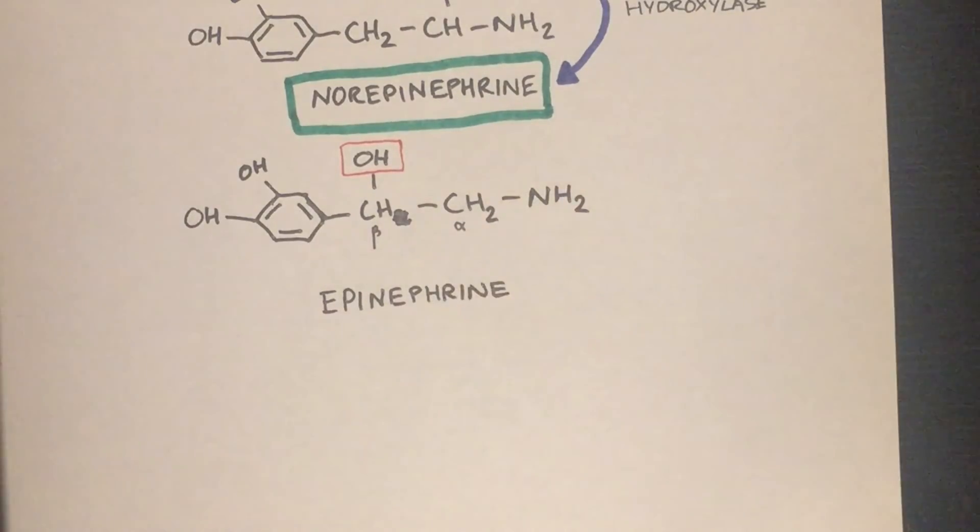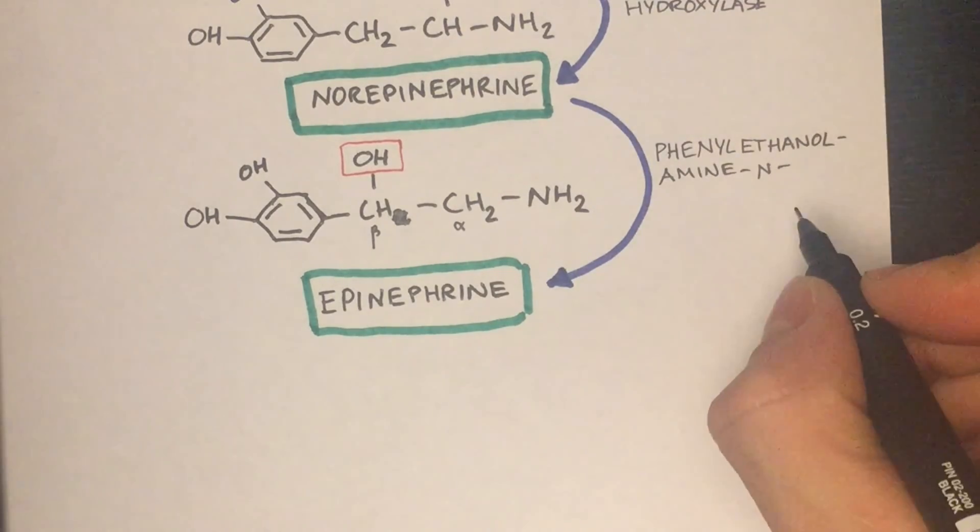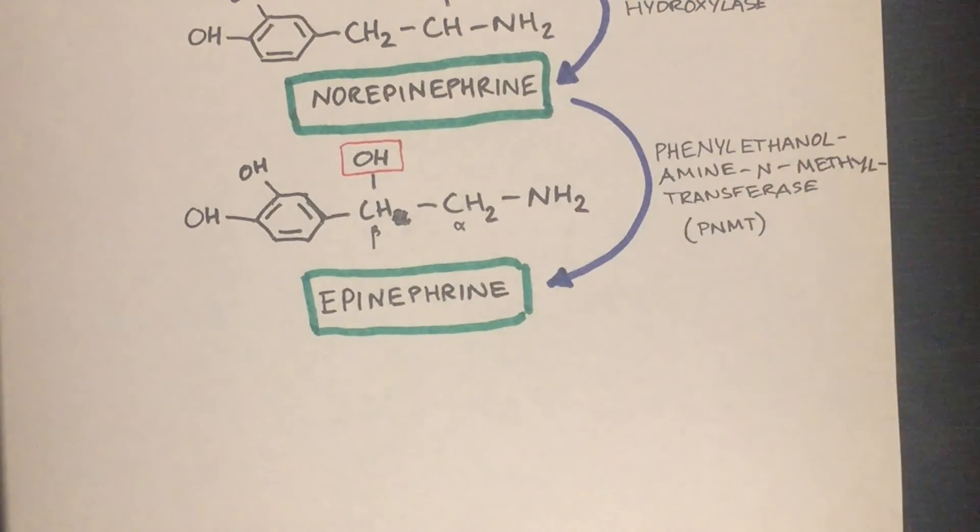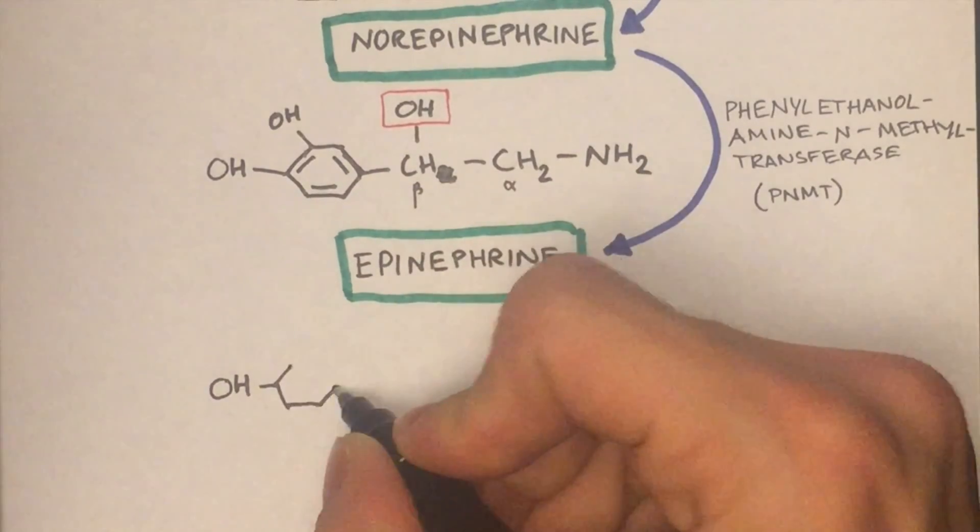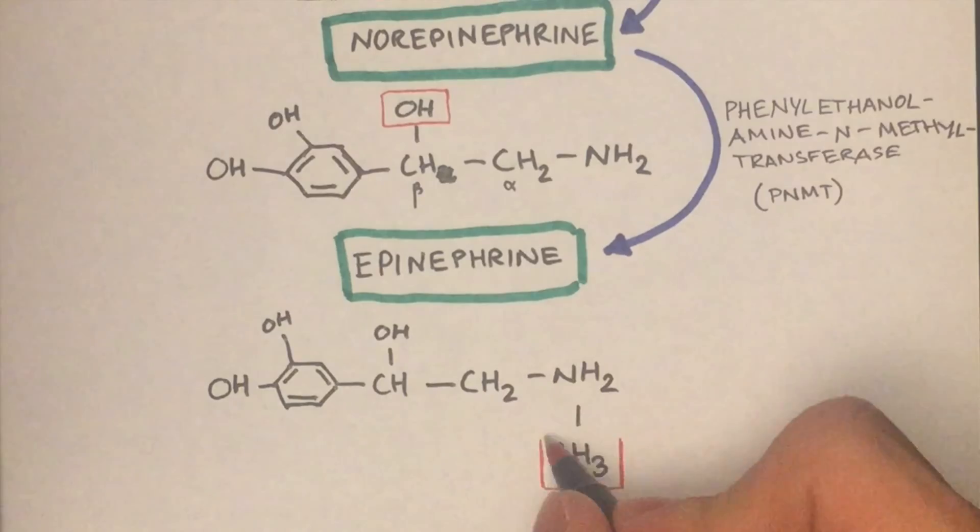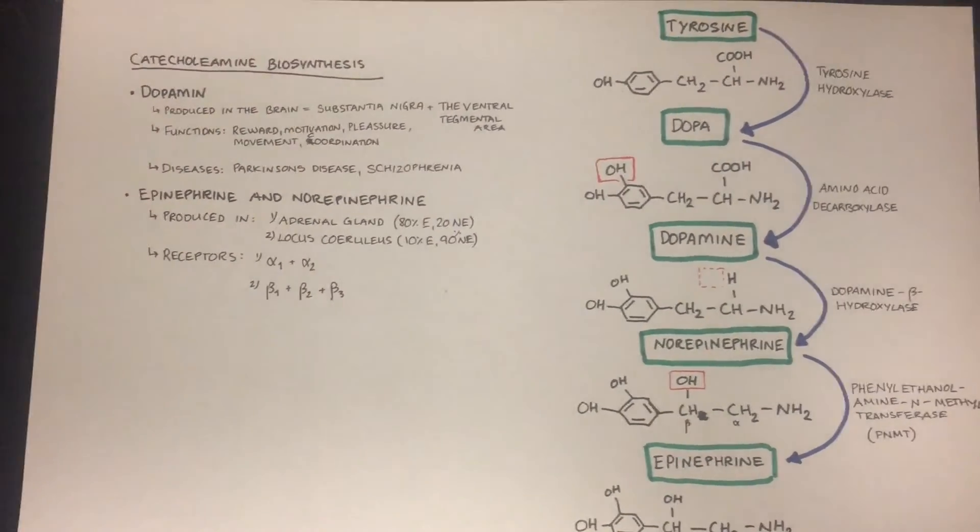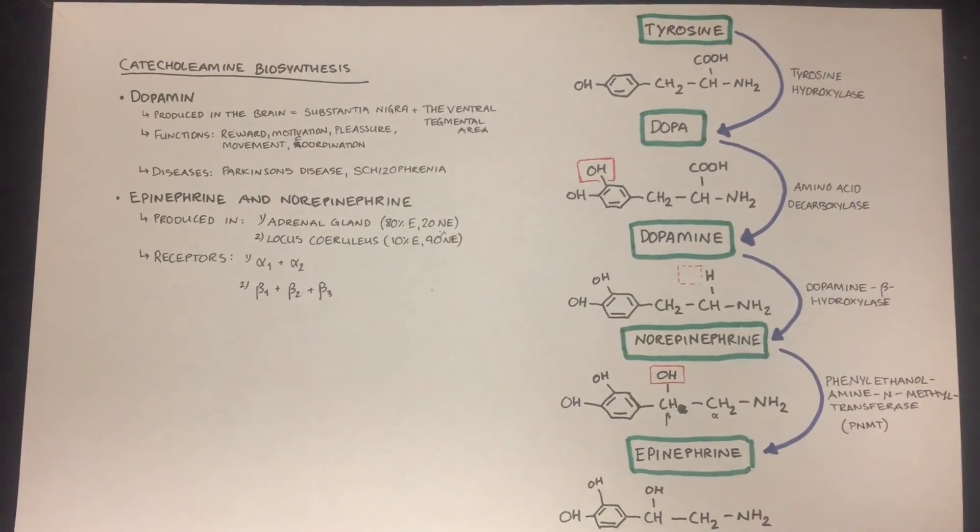The final step is when norepinephrine is made into epinephrine by the addition of a methyl group by a methyltransferase. That was the biosynthesis of the important catecholamines. Thank you for watching.